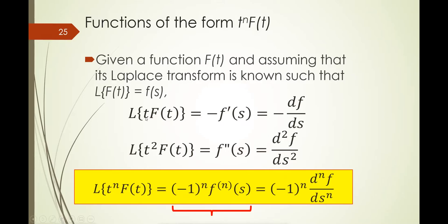The Laplace of t times f(t) is basically the negative first derivative of F(s). And if it's t squared times f(t), it's the second derivative of F(s). The general formula is: the Laplace of t^n times f(t) equals negative 1 raised to n, times the nth derivative of F(s). It's important that you know this.